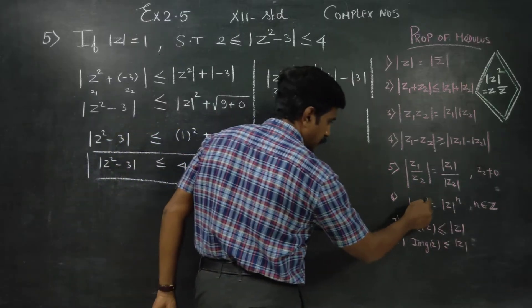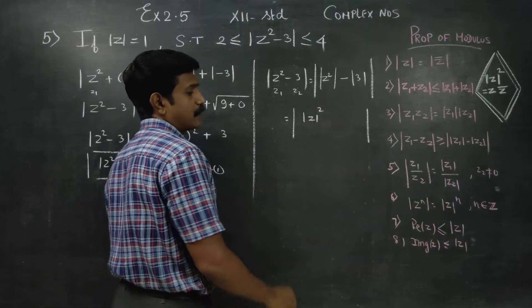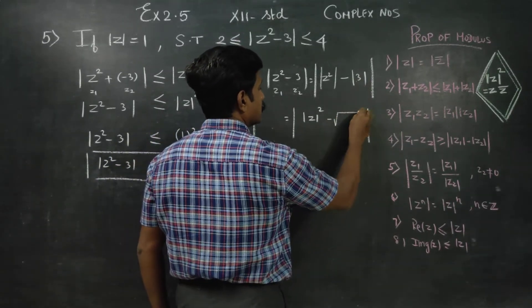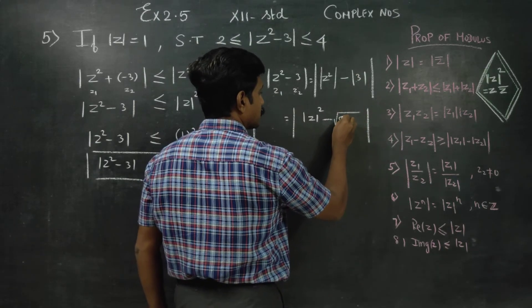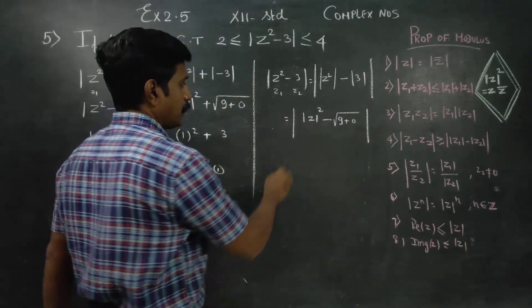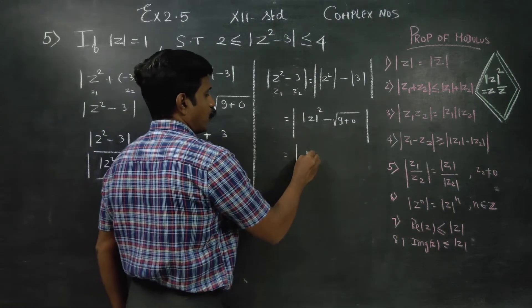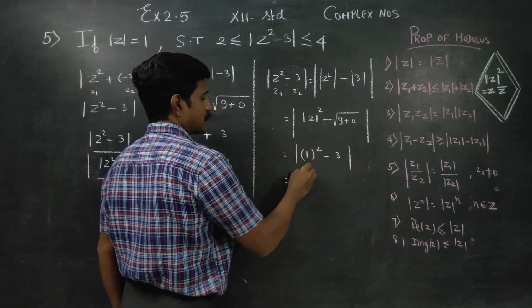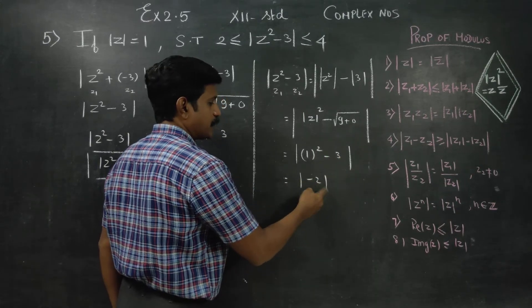The modulus of z² equals modulus of z squared. Since |z| = 1, we have |z|² = 1² = 1. So |z²| minus 3 gives 1 minus 3, which equals -2. The absolute value of -2 is 2. This is positive.